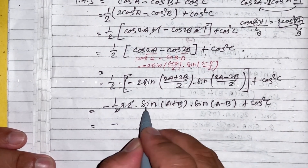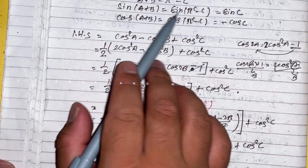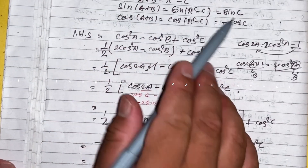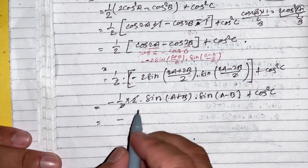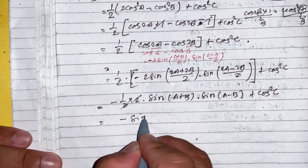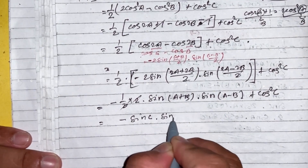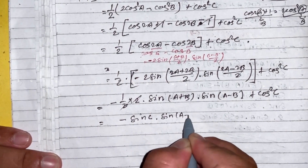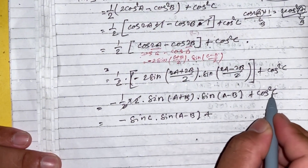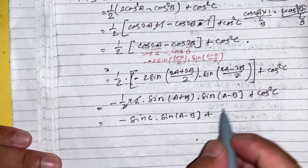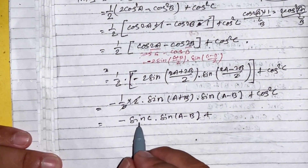So we get minus 2 sin(a plus b) sin(a minus b) plus cos square c, simplifying further using sin(a+b) equals sin c.